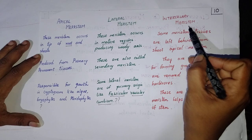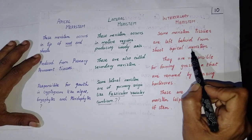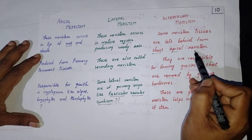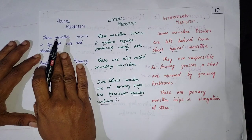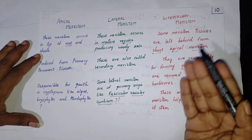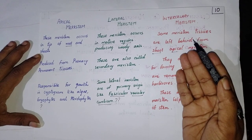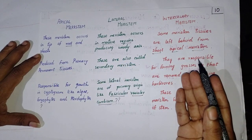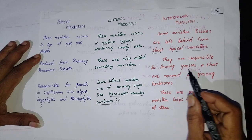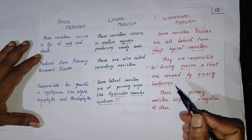Next we have intercalary meristems. Some meristematic tissues are left behind from the shoot apical meristem. The apical meristems found in the shoot system are left behind and they form the intercalary meristem. They are responsible for the regrowth of grasses that have been grazed by herbivorous animals.